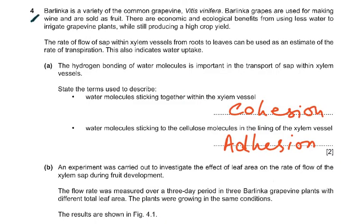Barlinka is a variety of common grapevine, Vitis vinifera. Barlinka grapes are used for making wine and sold as fruit. There are economic and ecological benefits from using less water to irrigate grapevine plants while still producing a high crop yield.